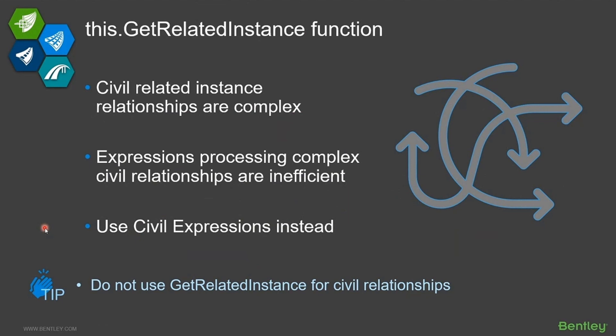The problem with civil data is it is much more complex — the data relationships are harder to navigate, and in particular we have relationships that don't all live in one model. Think about your 2D model, 3D model, and profile models and the relationships that have to exist between those. Even in examples where people have to a degree been successful getting get related instance to return some of the data they want, we know those are not going to work in all situations because of the multi-model relationships involved.